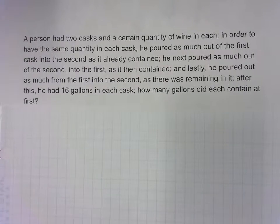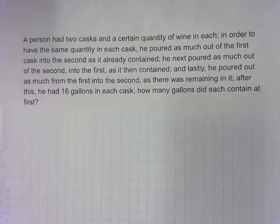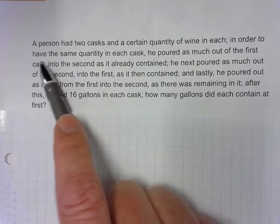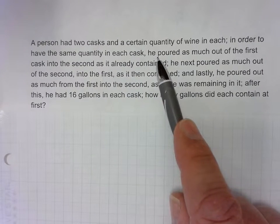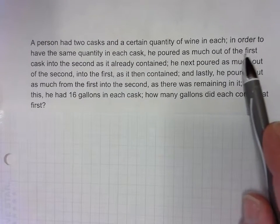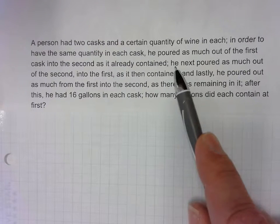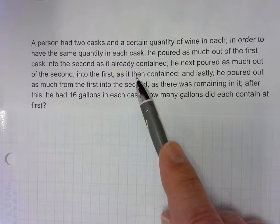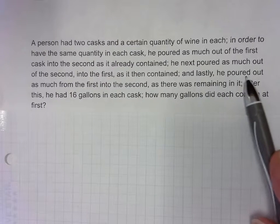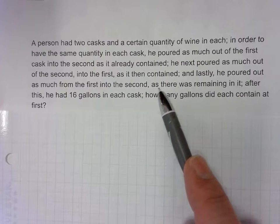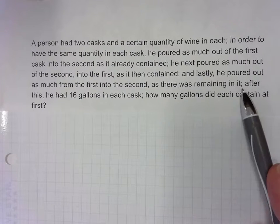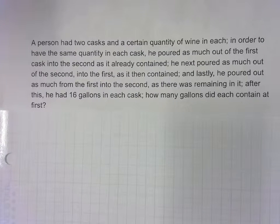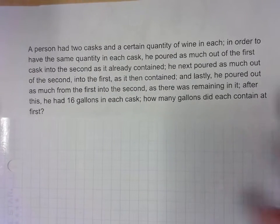So here's the story problem typed out so you can read it better. A person has two casks and a certain quantity of wine in each. In order to have the same quantity in each, he poured as much out of the first cask as the second has already contained. He poured as much out of the second into the first as it then contained. And lastly, he poured out as much from the first into the second as there was remaining in it. After this, he had 16 gallons in each cask. How many gallons did each contain at first?